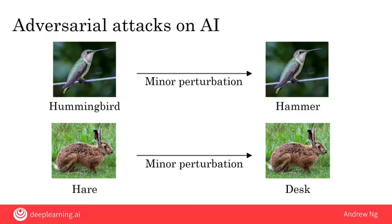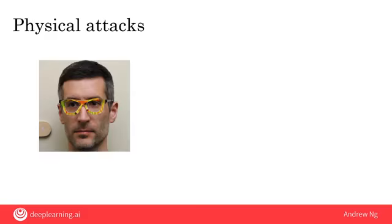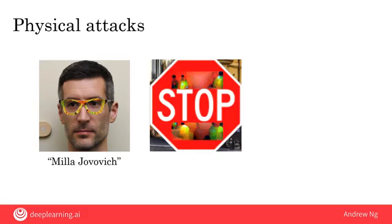There are some attacks that work by changing the physical world as well. For example, a group at Carnegie Mellon University was able to design a funky pair of glasses so that when this man wears them, he can fool an AI system into thinking that he is actress Mila Jovovich. It's remarkable that just wearing a pair of glasses like this can fool an AI system into thinking that this man is a well-known actress.